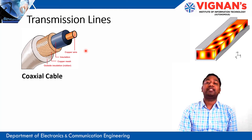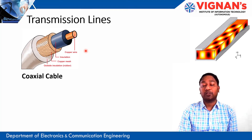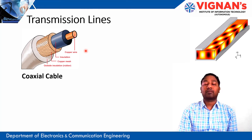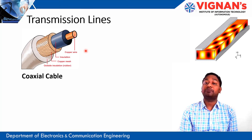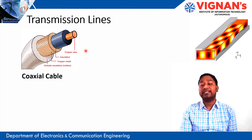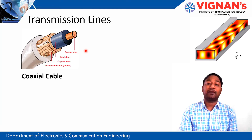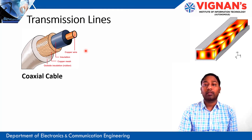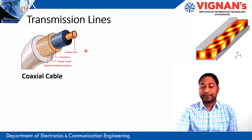There is a limitation to the use of coaxial cable: it can be used only up to 3 GHz. After that, specially designed coaxial cables are used up to 10 GHz, but beyond 10 GHz it is not possible. We will discuss why later.